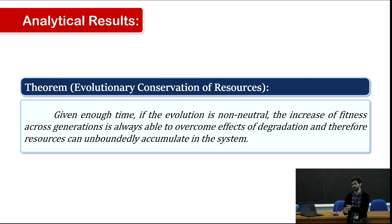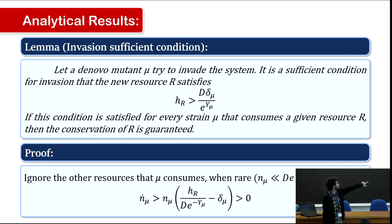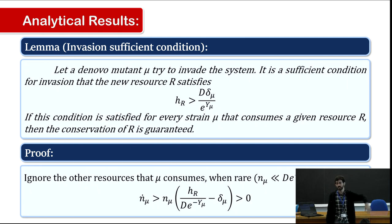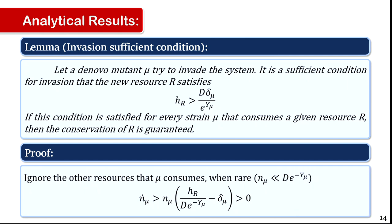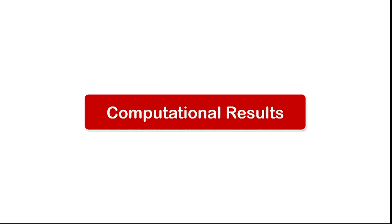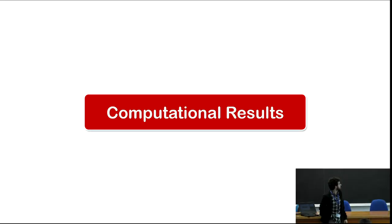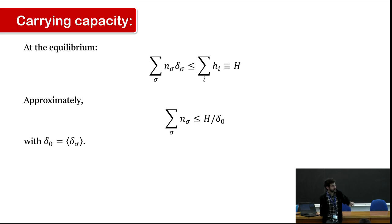From the invasion condition we see that if we increase log fitness, the resource quality can decrease as much as we want — you just need high fitness for a random resource invader to enter the system. You just need to give it enough time.